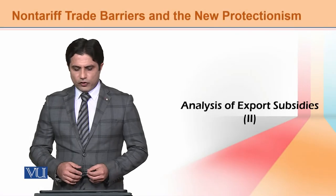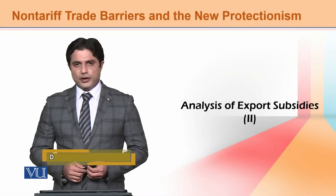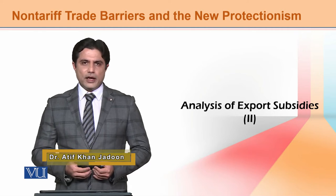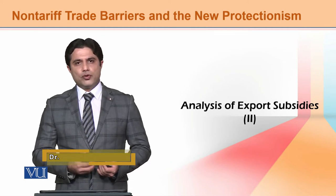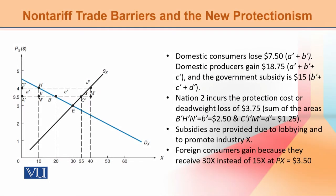In this second section of the analysis of export subsidies, we will discuss what consumers gain or lose and what producers gain or lose in net form — the particular amount of gain or loss a consumer has, and what the producer is gaining or losing after receiving subsidies. Starting from the same point we discussed in the previous module.